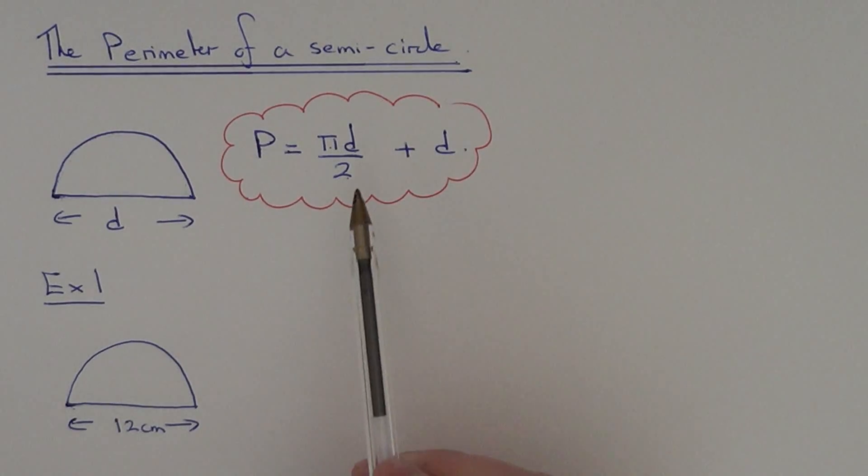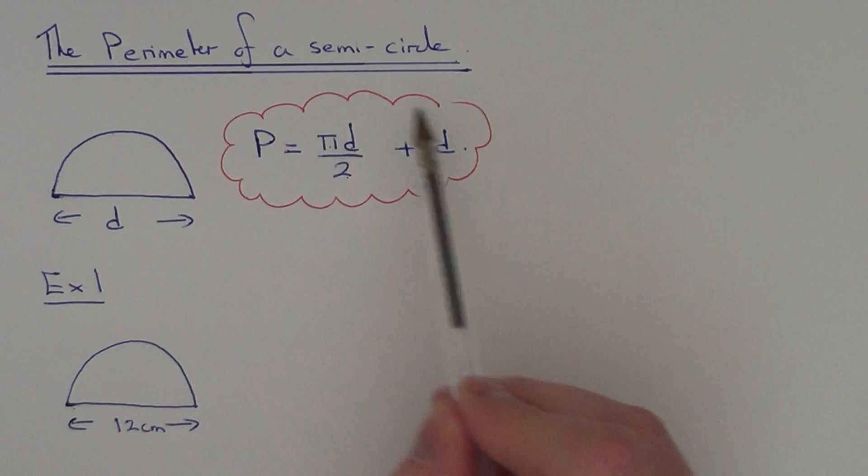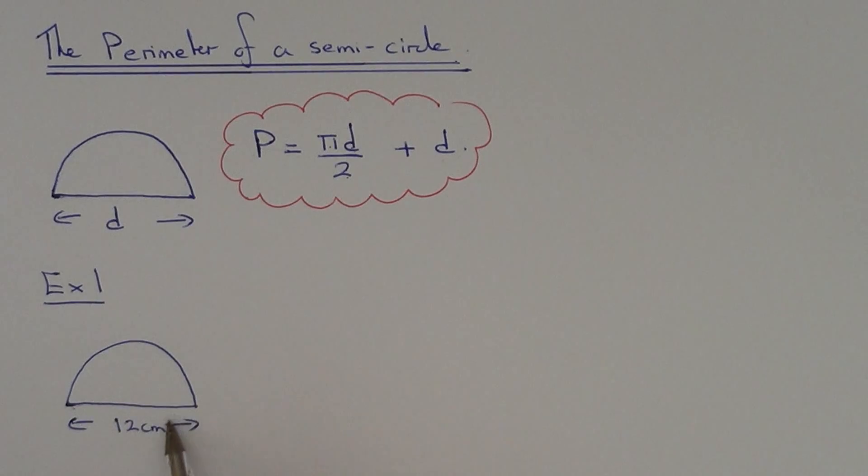So all we need to do then is substitute the diameter into this formula. Let's take a look at an example. Here we've got a semicircle, and we have the diameter of the semicircle which is 12.